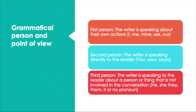Now let's talk about grammatical person and point of view — first person, second person, third person. First person is when the writer is speaking about the writer's own actions, using words like 'I,' 'me,' 'mine,' 'we,' or 'our.' Second person is when the writer is speaking directly to the reader, using words like 'you,' 'your,' or 'yours.' Third person is when the writer is speaking to the reader about a person or thing not involved in the conversation, using 'he,' 'she,' 'they,' 'them,' 'it,' or no pronoun at all.